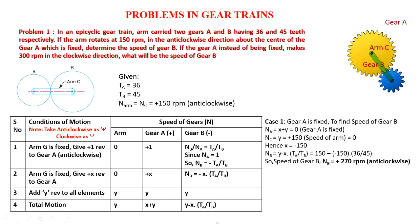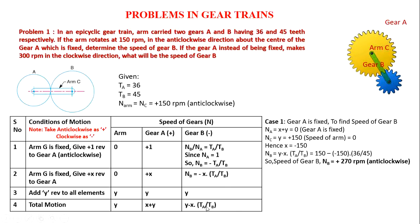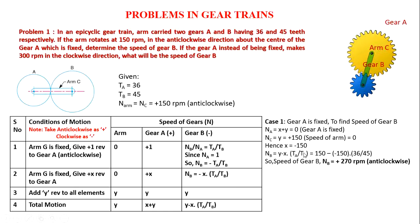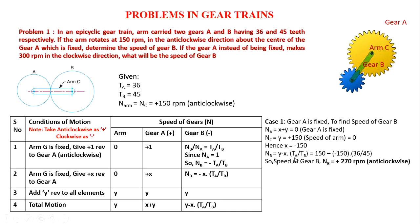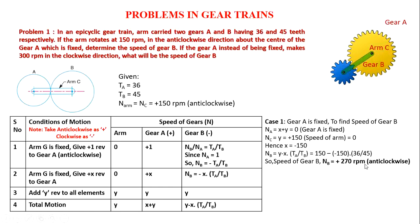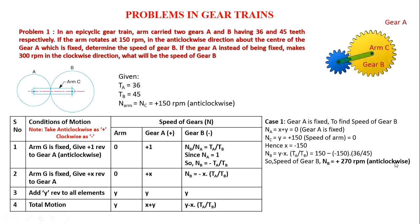To determine the speed of gear B: NB equals Y minus X times TA/TB. Substituting Y equals 150, X equals minus 150, TA equals 36, and TB equals 45, we get the speed of gear B as plus 270 RPM. Since this is positive, gear B is rotating in the anticlockwise direction.